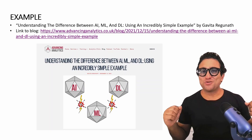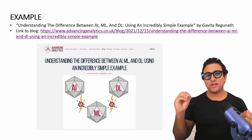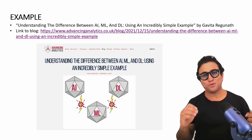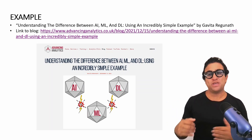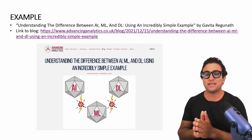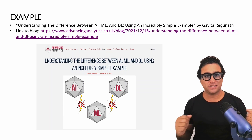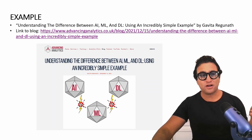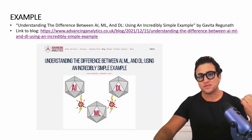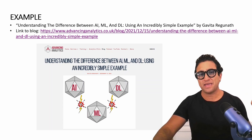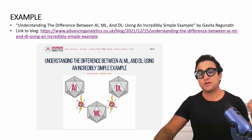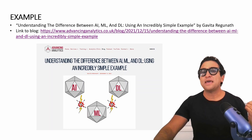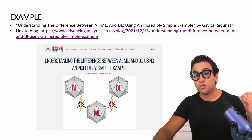Let's take a look at a great example that shows the difference between machine learning, deep learning, and artificial intelligence. The example comes from a great blog entitled 'Understanding the Difference Between AI, ML, and DL using an Incredibly Simple Example' by Gavita Regunath. I've included a link for you guys.